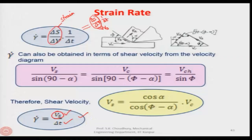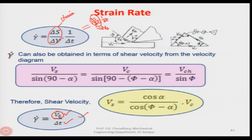I would like to make a small correction: in the shear strain rate, we said this is delta s by delta y into 1 by delta t. We can write this not like that but delta s by delta t, which I am correcting. Please make that correction — delta t is actually the Vs, and therefore it will be divided by 1 by delta y.